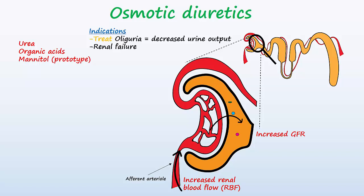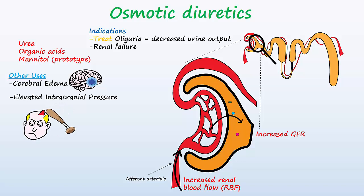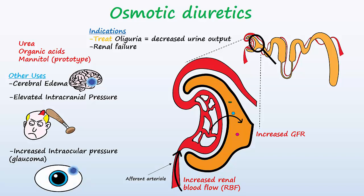Osmotic diuretics are also often indicated to reduce cerebral edema and elevated intracranial pressure with head injuries, as well as for increased intraocular pressure, and in the treatment of drug overdose or toxicity to increase the rate of drug excretion.